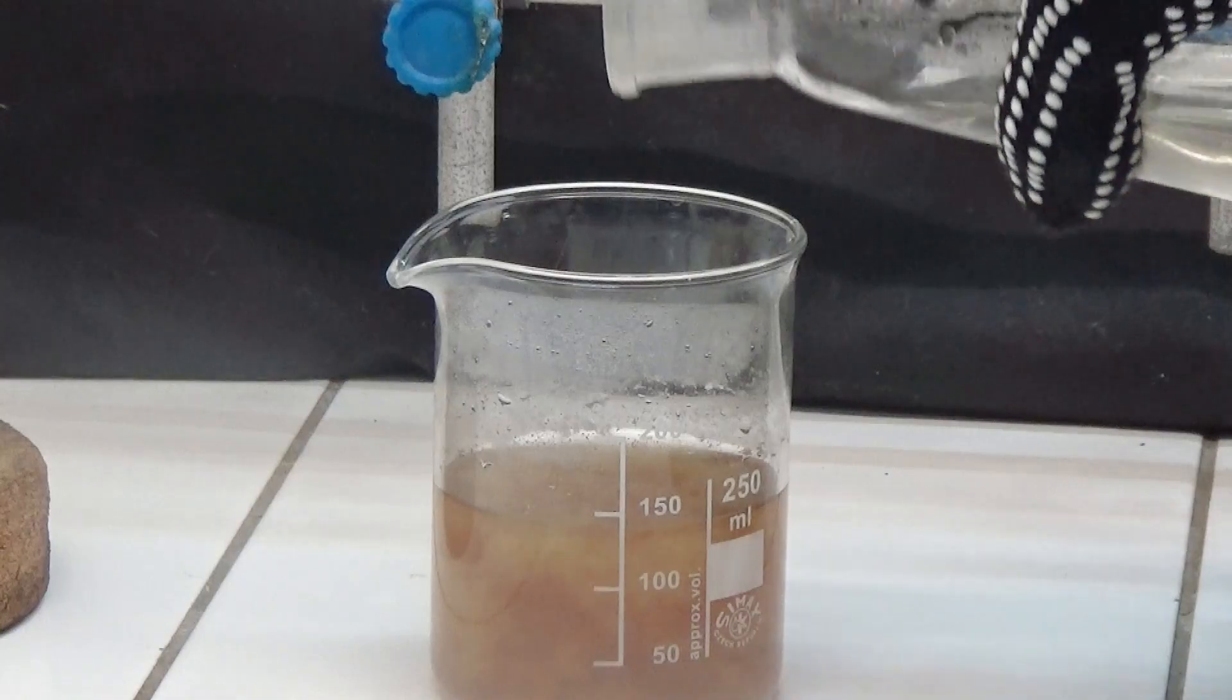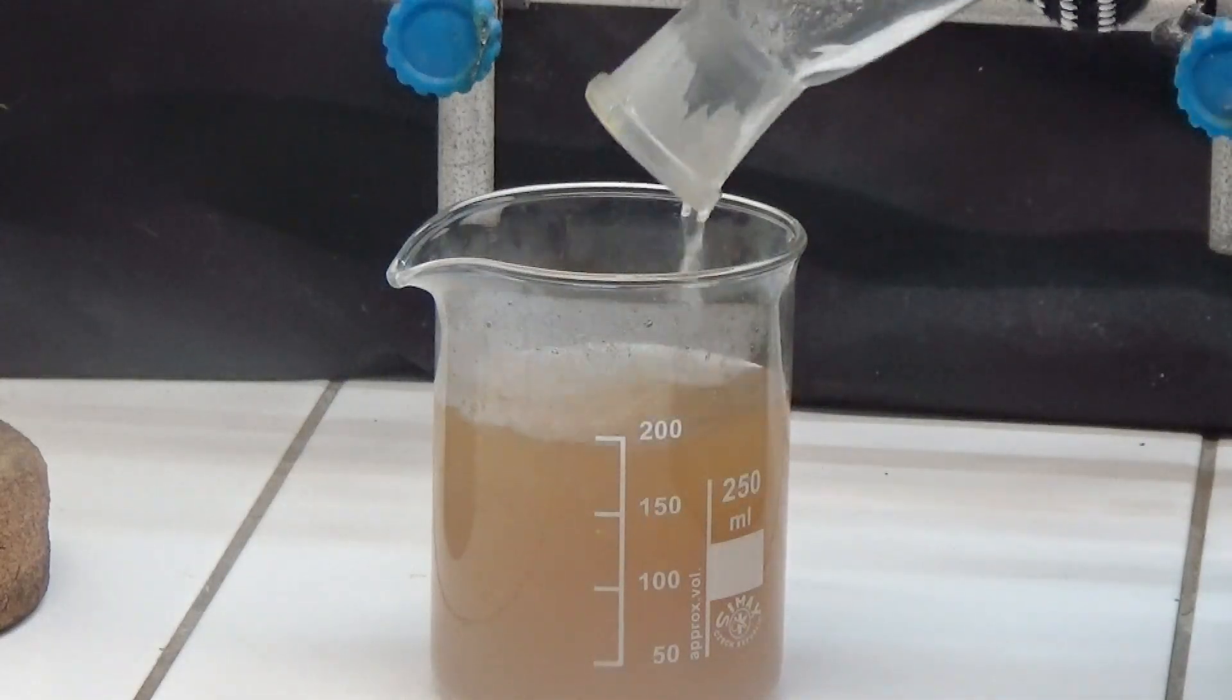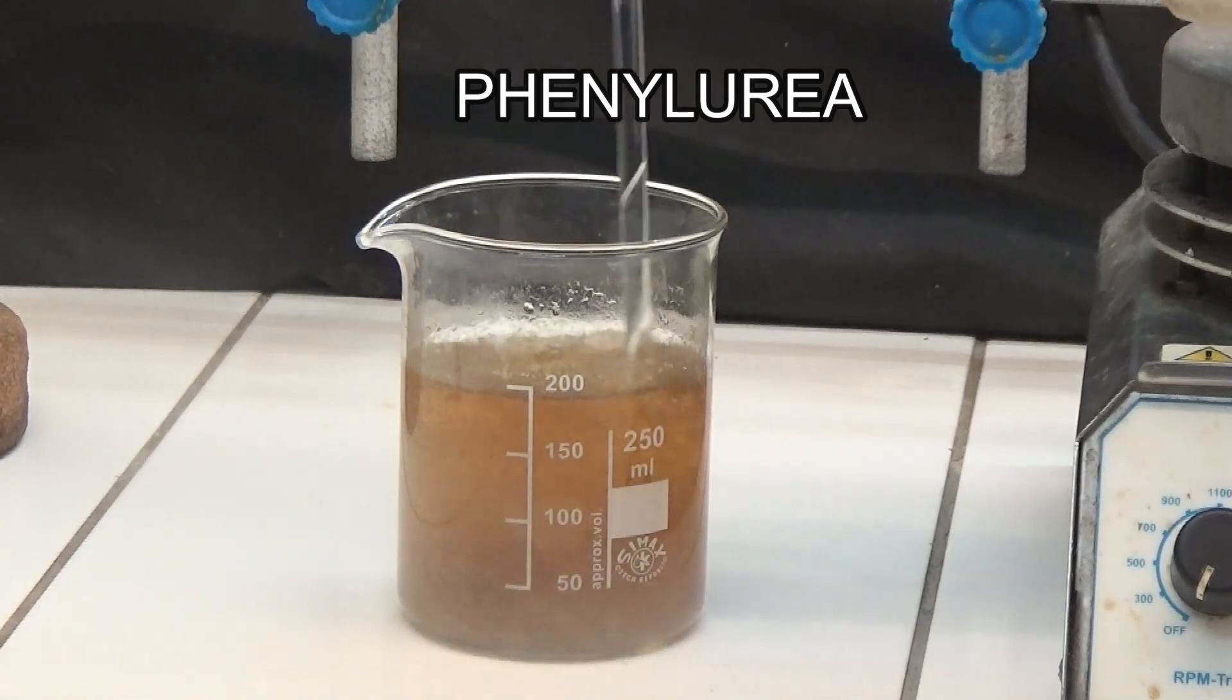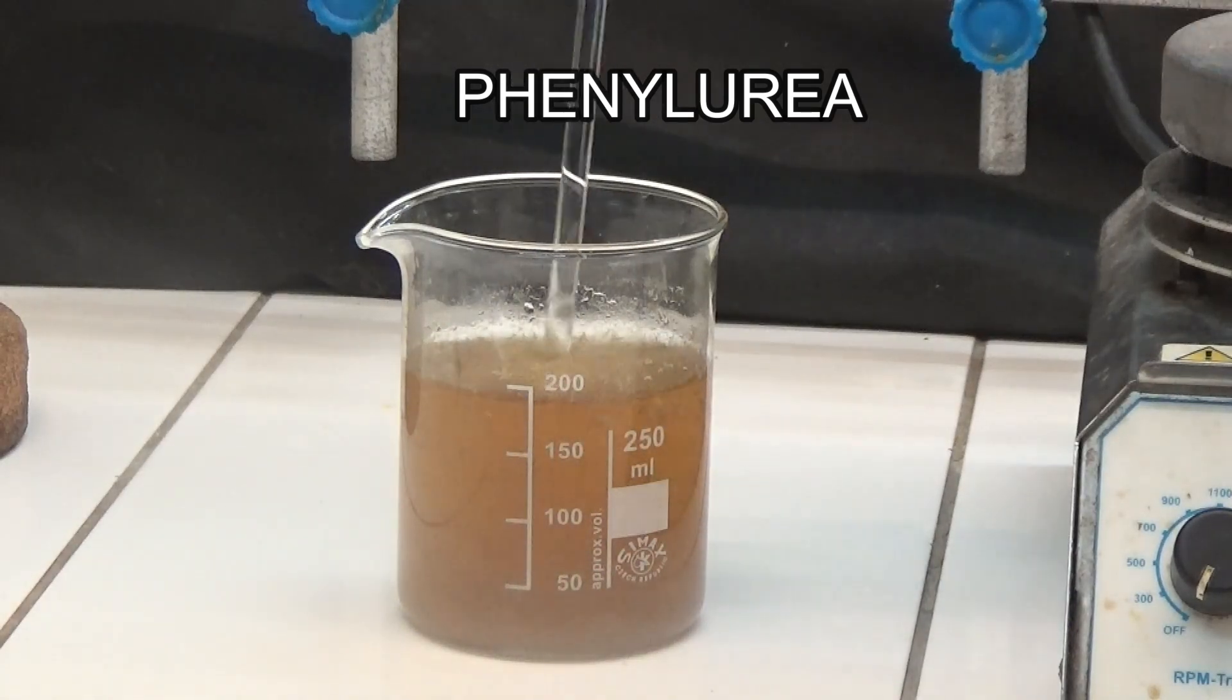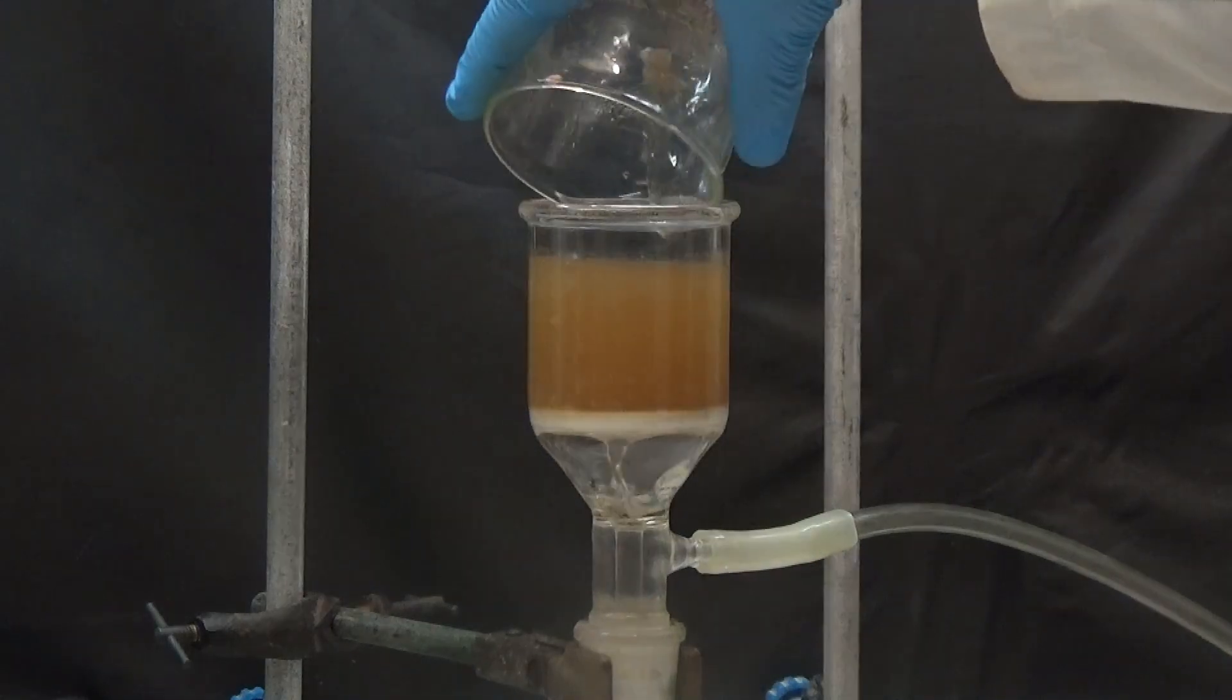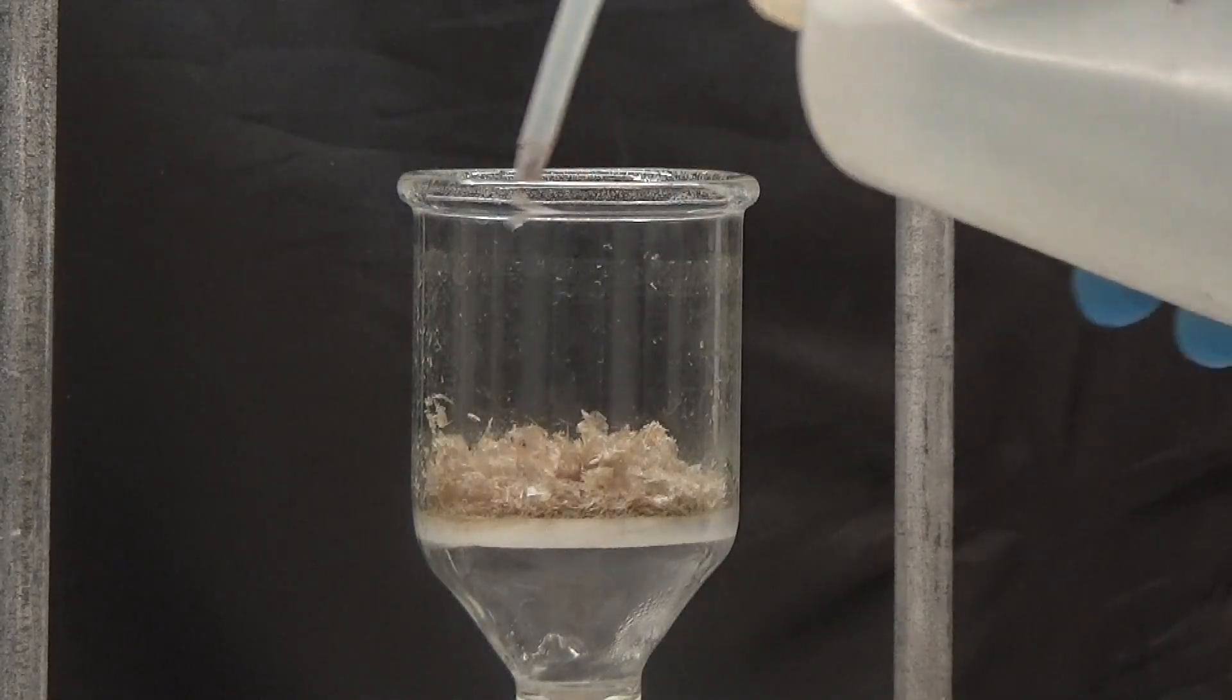The liquid that has been filtered with the 2 washes is permitted to cool. Once the filtrate is cold, the fine needles of phenylurea crystallize. Gather the crystals and wash them using cold water. The liquid washing is discarded.